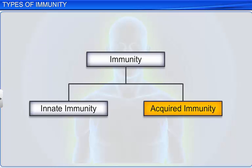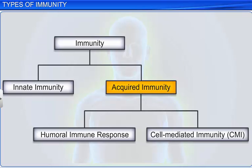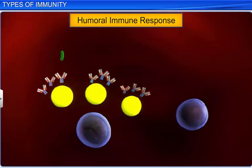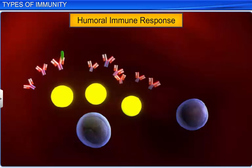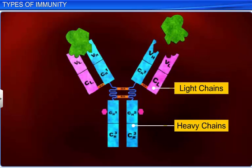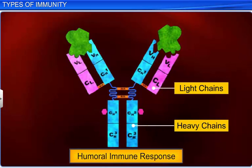Acquired immunity, or the acquired immune response, is primarily of two types: a humoral immune response, and a cell mediated immunity, or CMI. It is the humoral immune response that is carried out by antibodies. Since antibodies are found in blood, it is called the humoral immune response. The word humoral refers to blood or any other body fluid.